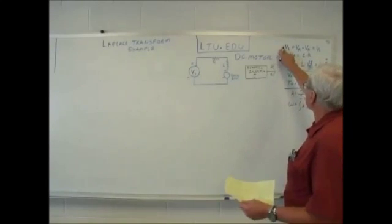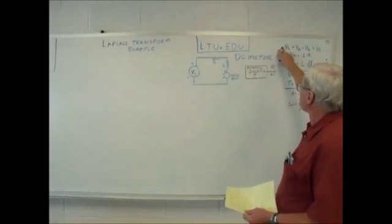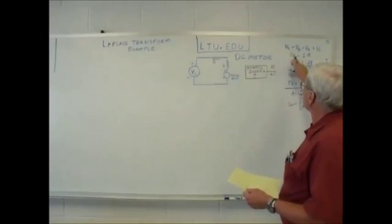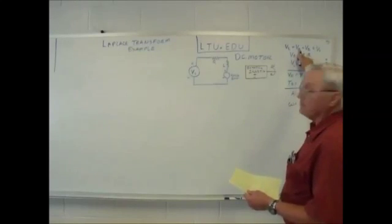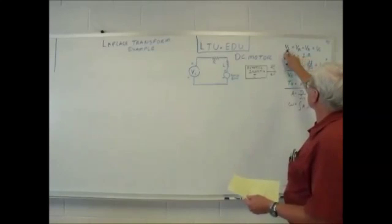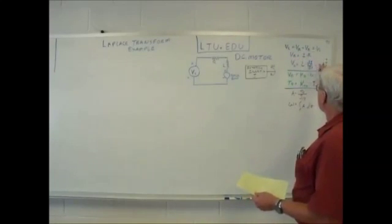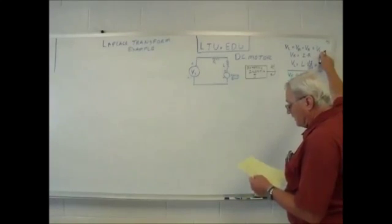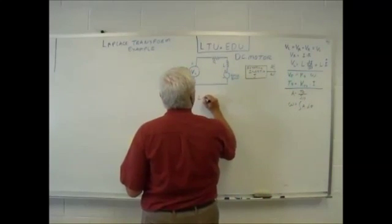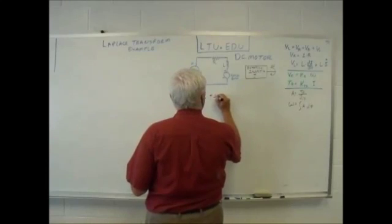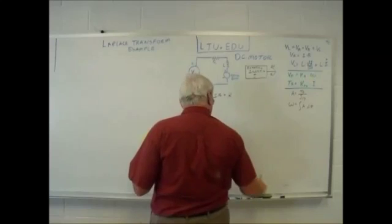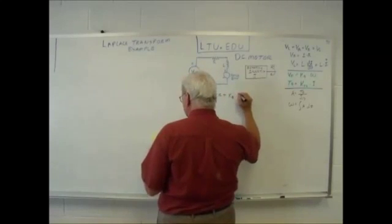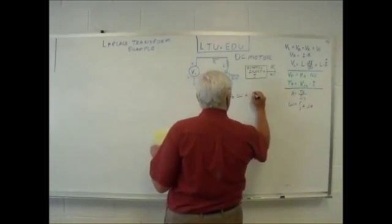We've put all these together. Let's start by taking the equation for the voltage loop — Kirchhoff's law — on the electrical side. I can substitute I times R for the voltage of the resistor, and L di/dt for the voltage of the inductor. For Vb, I can substitute the back EMF term. Vs is just the source voltage, which is our input. So I end up with L·I-dot plus I·R plus Kb times omega equals Vs.